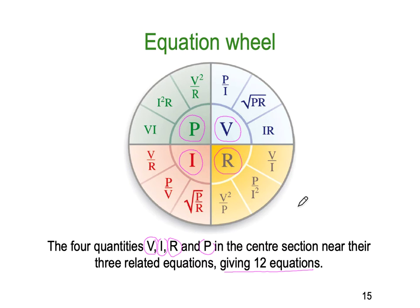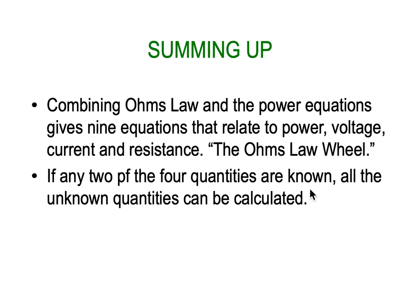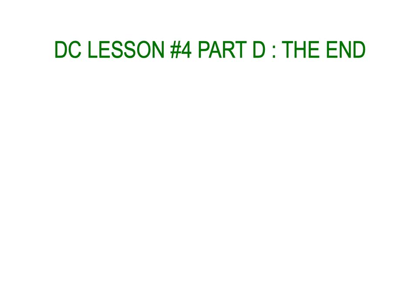To sum up: combining Ohm's Law and the power equations gives 12 equations relating power, voltage, current, and resistance — the Ohm's Law wheel. If any two of the four quantities are known, all the others can be calculated. If you can learn to transpose those equations it's very helpful, but equation sheets with the Ohm's Law wheel are normally provided. That's the end of Lesson 4, Part D.